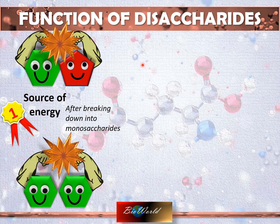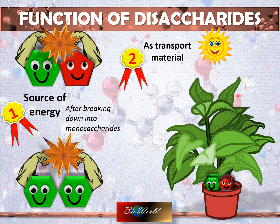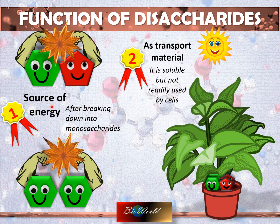The second function of disaccharides is specific to plants. When plants carry out photosynthesis, they produce glucose, but the glucose will condense into sucrose before being transported to parts of plants that need nutrients. The reason why the plant does not transport glucose directly is because glucose will be used up by the plant cells. Sucrose however is not readily used because it has to be broken down first, so it is more efficient to transport in the form of sucrose. Of course, plants will not transport in the form of starch because starch is not soluble.